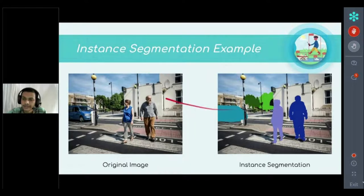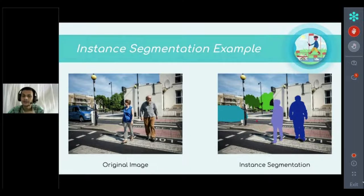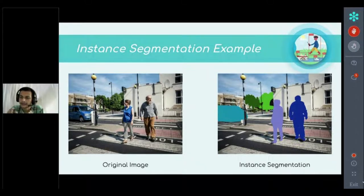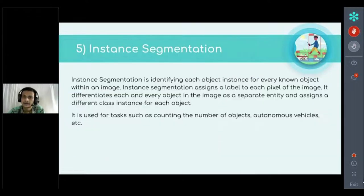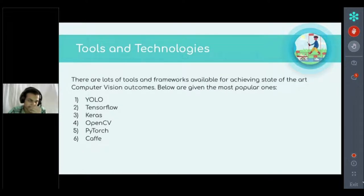For example, instance segmentation gives output where one human is labeled 'person one', another is 'person two', and cars are labeled 'car one', 'car two', and so on. It differentiates objects based on edges and assigns different labels and unique IDs, so we can count each object — two humans, two trees, two cars — unlike semantic segmentation. This is the key difference between semantic and instance segmentation.